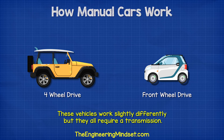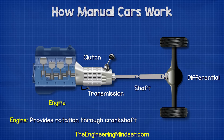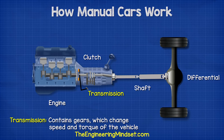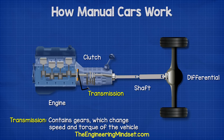The engine combusts fuel, which moves the pistons and crankshaft, creating rotation. The clutch engages or disengages the engine's rotational energy to the transmission. The transmission contains a number of gears, which transfer the power of the engine towards the wheels and enables us to change the speed and torque of the vehicle.